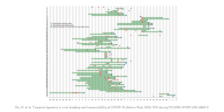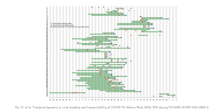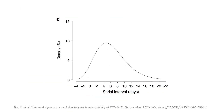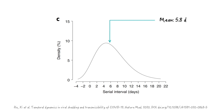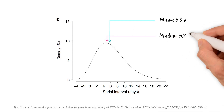Now, we can't infer the incubation period from looking at this graph, but we can definitely determine the serial intervals. That's the duration from the red spots to the blue spots for each transmission pair. And when they did that, they found that the serial interval in their transmission pairs was distributed somewhat like a bell curve with a right skew.